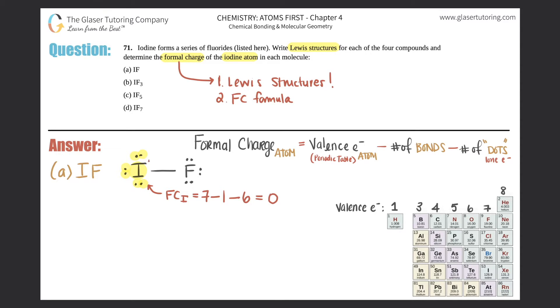Which means that this iodine would be neutral - stable, happy. So this iodine with one bond and three lone pairs is neutral, and that's every single time. There will never be a time in which iodine with one bond would not be neutral.